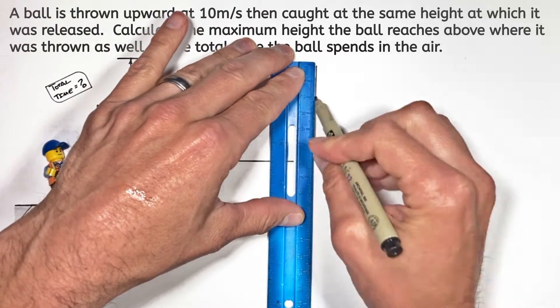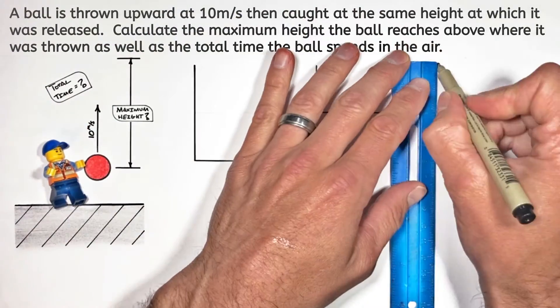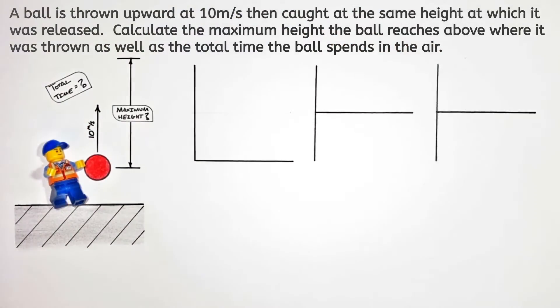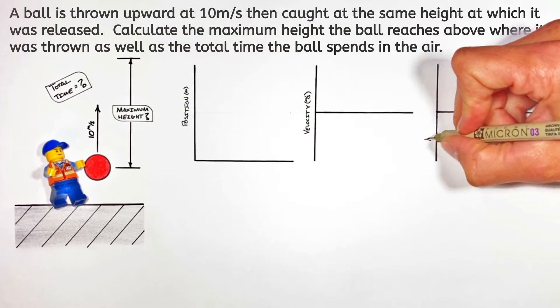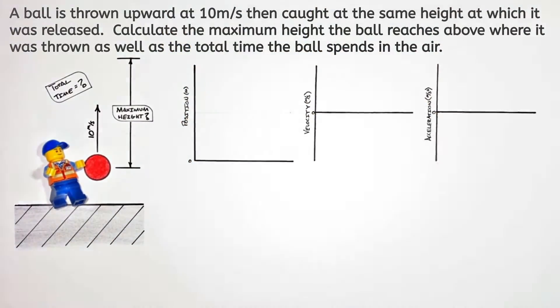I want you to actually understand what's going on in this problem, so we're gonna start not by punching some numbers into some equations, rather we're gonna graph the position, velocity, and acceleration of the ball as it moves through the air.